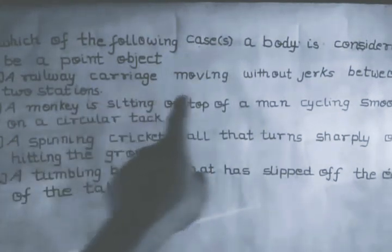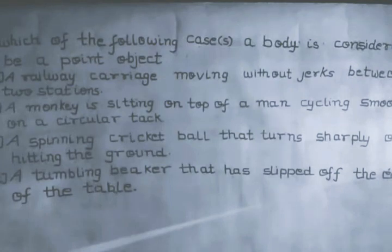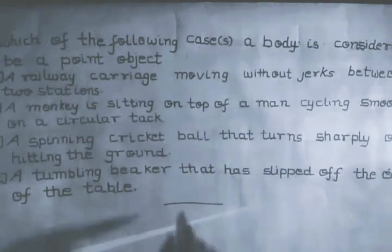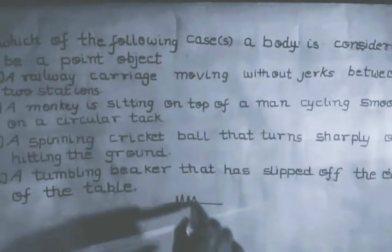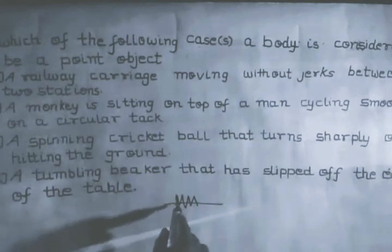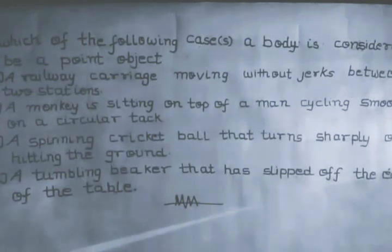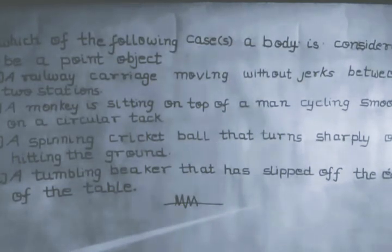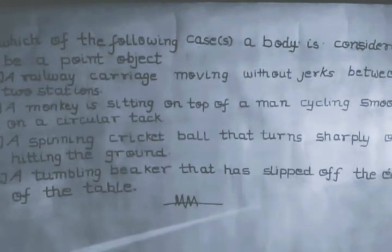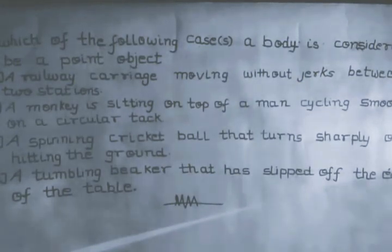Case A: a railway carriage moving without jerks. If it is moving with jerks, then during jerks it will move along another direction as well. In that case, the distance traveled in that direction will not be large enough compared to its size, so it will not be considered a point object. Case B: a monkey sitting on top of a man cycling smoothly. If not smoothly, the monkey might move here and there — there will be jerks and motion in other dimensions — so it will not be considered a point object.